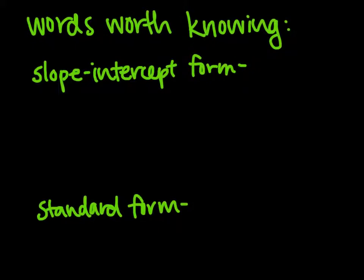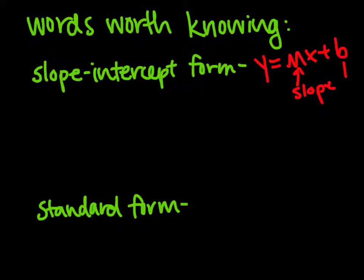Our very first word is slope-intercept form. Slope-intercept form is the one we all know and love: y equals mx plus b. And in slope-intercept form we can find the slope and the y-intercept. It's nice and easy, hence the name slope-intercept form.